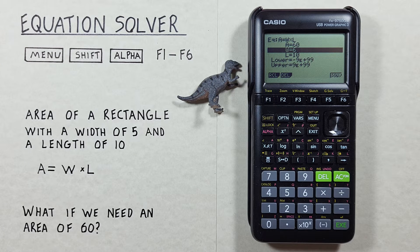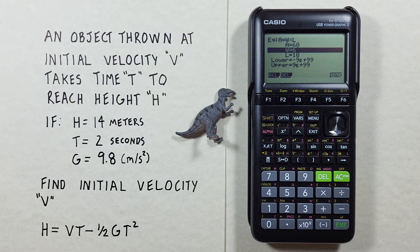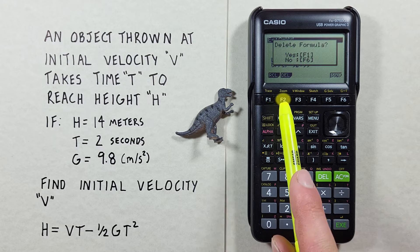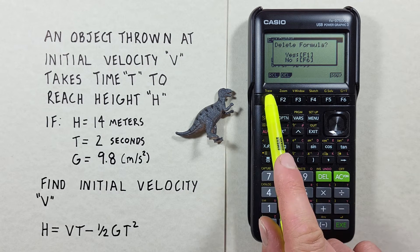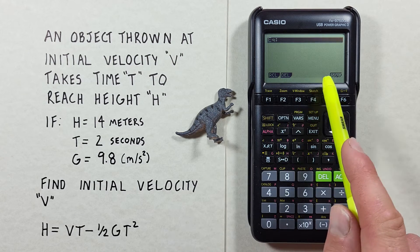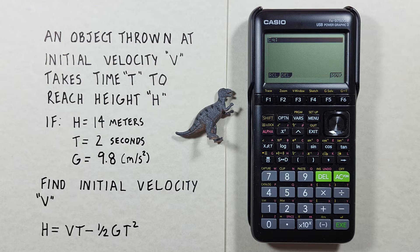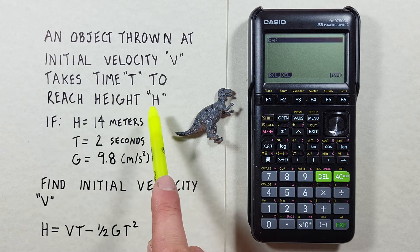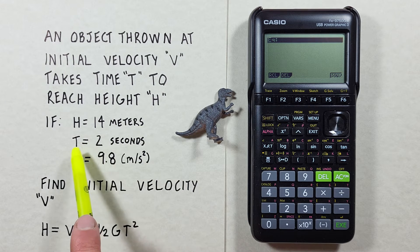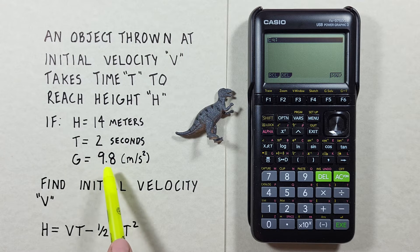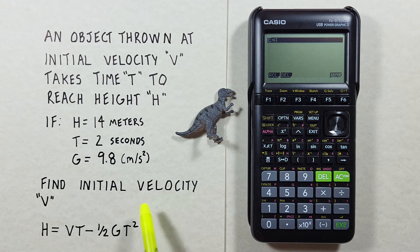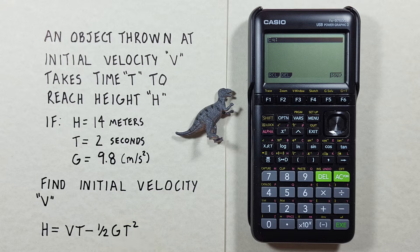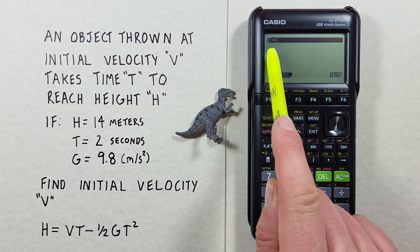Let's try a different equation, something a little more complicated. If we want to enter a new equation, all we have to do is scroll up to the EQ. We can hit delete to delete that. It'll ask to confirm. We'll hit F1 and we're back here, where we can enter our new formula or equation. For this example, we have an object thrown at initial velocity v takes time t to reach height h. If h is equal to 14 meters, t is equal to 2 seconds, and g is equal to 9.8 meters per second squared, find the initial velocity v. Here's our formula: h equals v times t minus 1 over 2 g t squared.